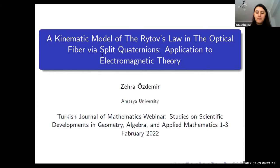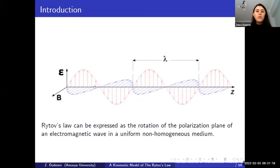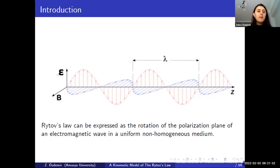First, I want to describe the electromagnetic wave. Here we can see an electromagnetic field model where E is the electric field, also called the polarization vector, and B is the magnetic field. It is a divergence-free vector field. The plane defined by E and B is called the polarization plane, and the z-axis can be assumed to represent the optical fiber direction.